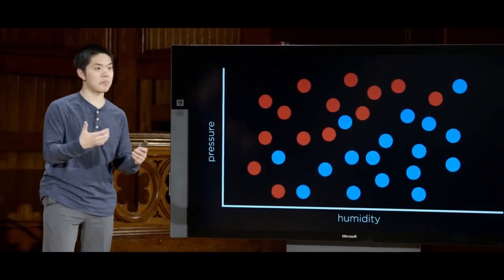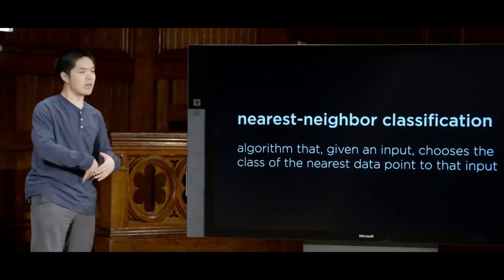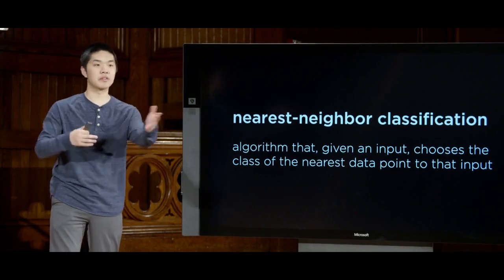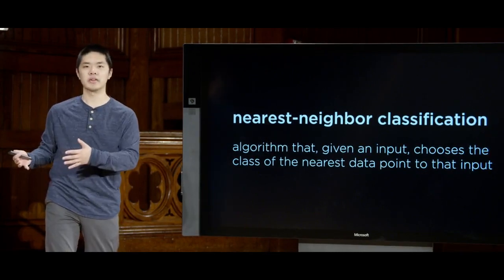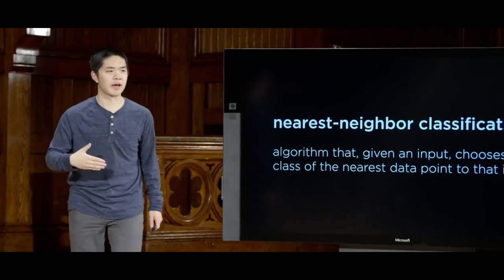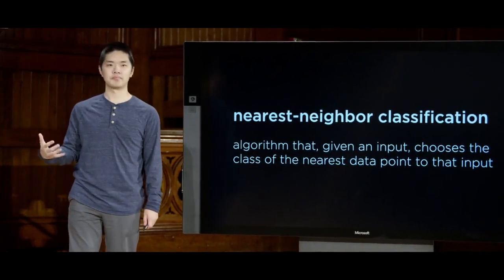This type of algorithm is a very popular machine learning algorithm known as nearest neighbor classification. It's an algorithm for solving classification type problems. In nearest neighbor classification, given an input, it will choose the class of the nearest data point to that input. By class we just mean category — like rain or no rain, counterfeit or not counterfeit. We choose the category based on the nearest data point. Given all that data, we look at whether the nearest data point is a blue point or a red point, and depending on the answer, we make some sort of judgment.